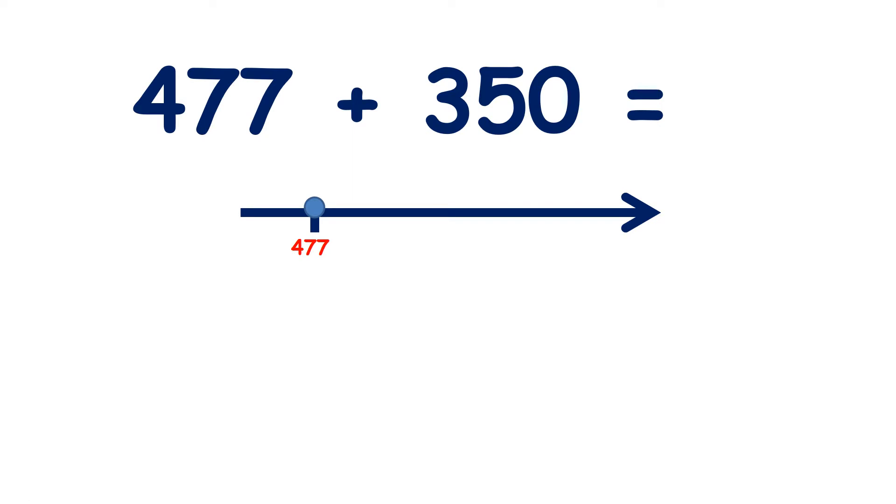Now pause the video and see if you can add 350 to 477. So if we add 3 hundreds to 477, that takes us to 777, because 4 plus 3 is 7. Now we need to add 5 tens.